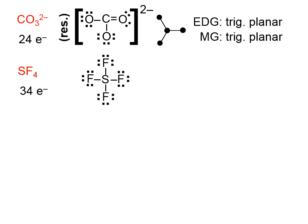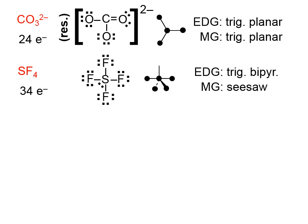Let's draw the Lewis structure for SF₄. When we count up valence electrons in the structure drawn so far, we count 32, but we need 34. The extra two go on the central atom. Counting electron domains gives five, so the electron domain geometry is trigonal bipyramidal. There are four atoms hanging off. If we rotate that, you can understand the seesaw molecular geometry — the atoms on the left and right alternate up and down like a seesaw, hence the name seesaw.